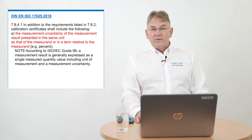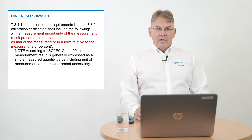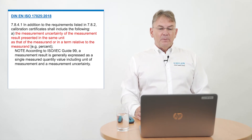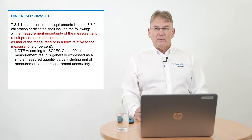Every calibration certificate has to have the measurement uncertainty of a measurement result, presented in the same unit or in percentage. The measurement uncertainty has to be a clear part of the calibration.